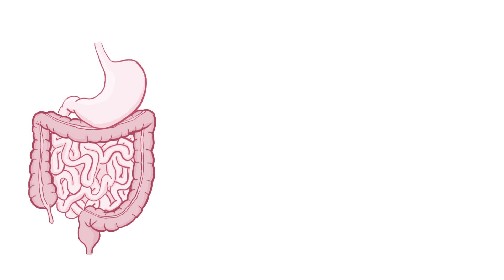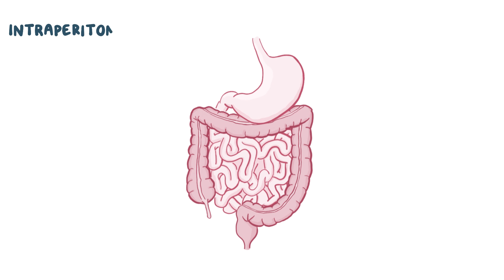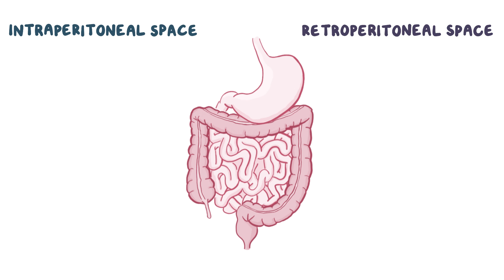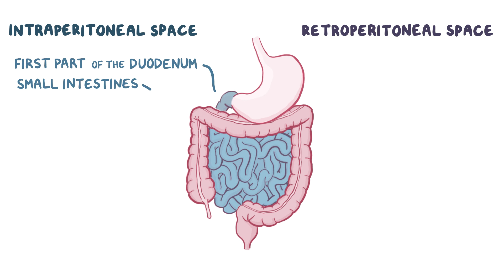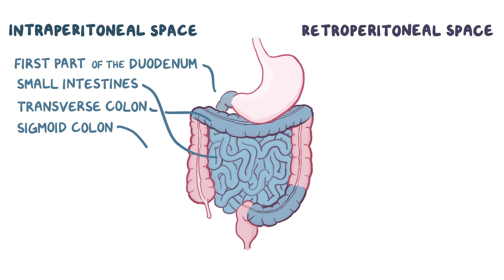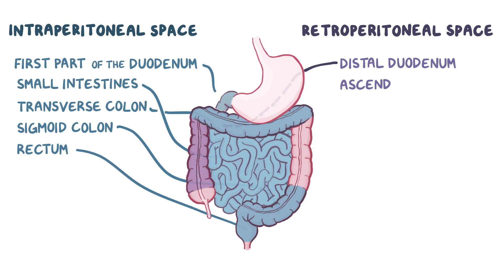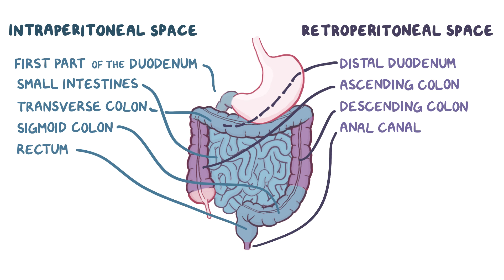The large intestine is found in the abdominal cavity, which can be thought of as having two spaces: the intraperitoneal space and the retroperitoneal space. The intraperitoneal space contains the first part of the duodenum, all of the small intestines, the transverse colon, sigmoid colon, and the rectum. The retroperitoneal space contains the distal duodenum, ascending colon, descending colon, and anal canal. So the large intestines essentially weave back and forth between the intraperitoneal and retroperitoneal spaces.